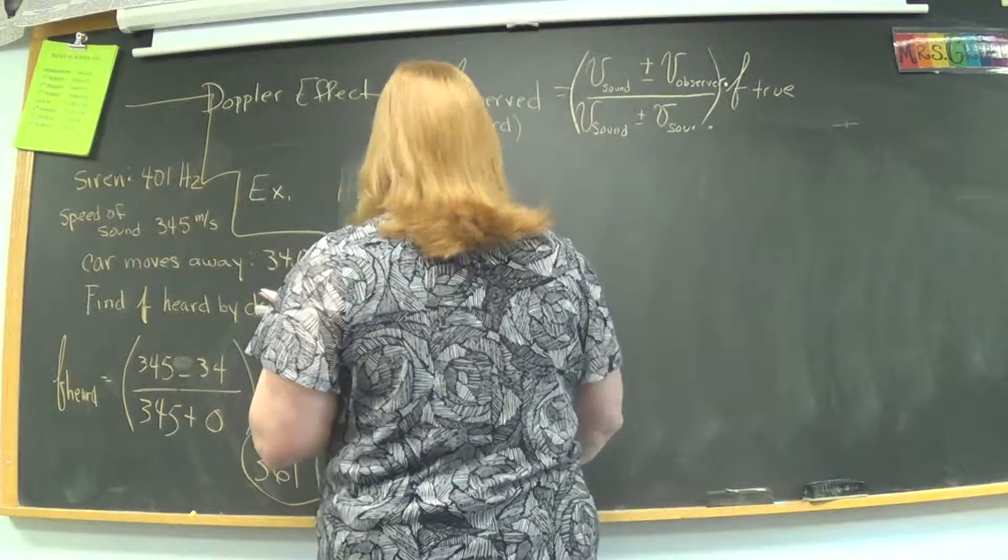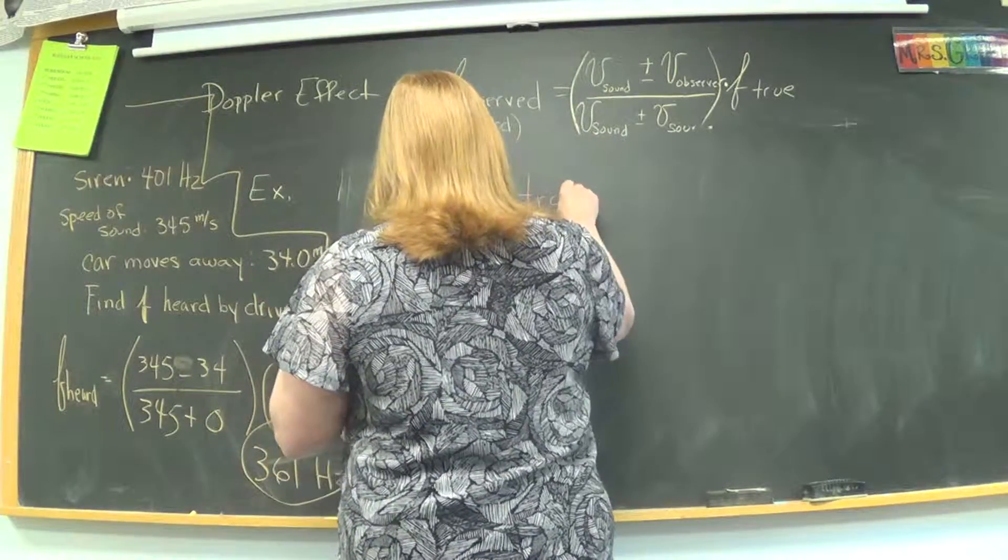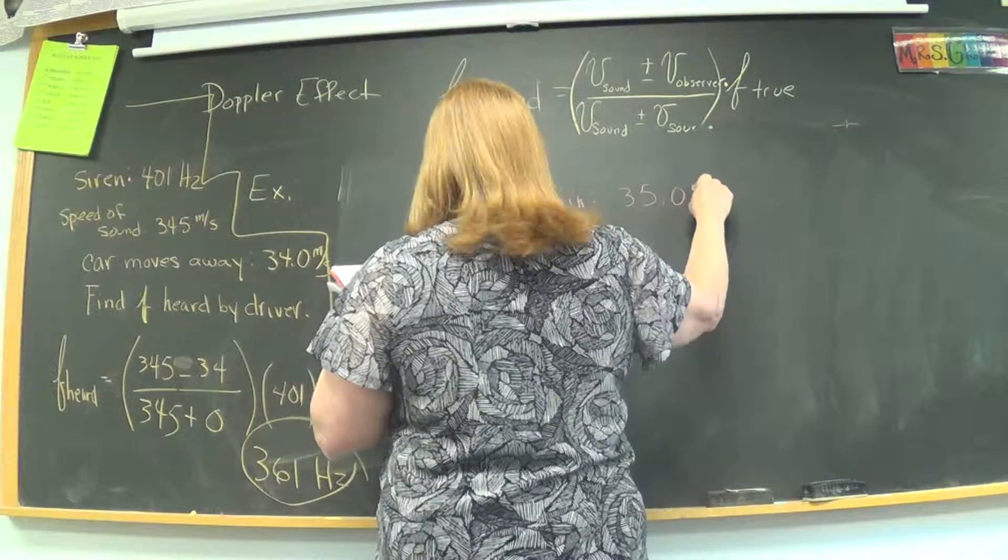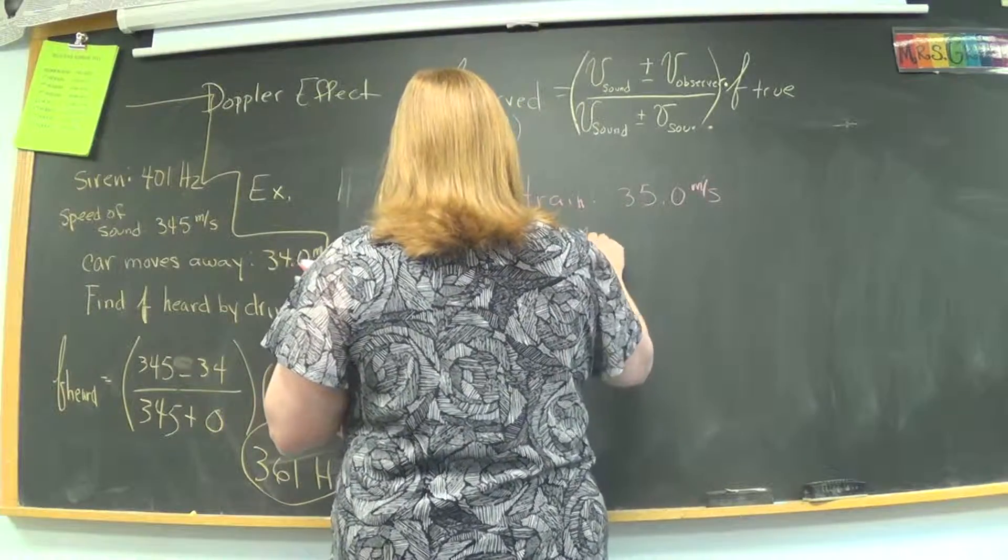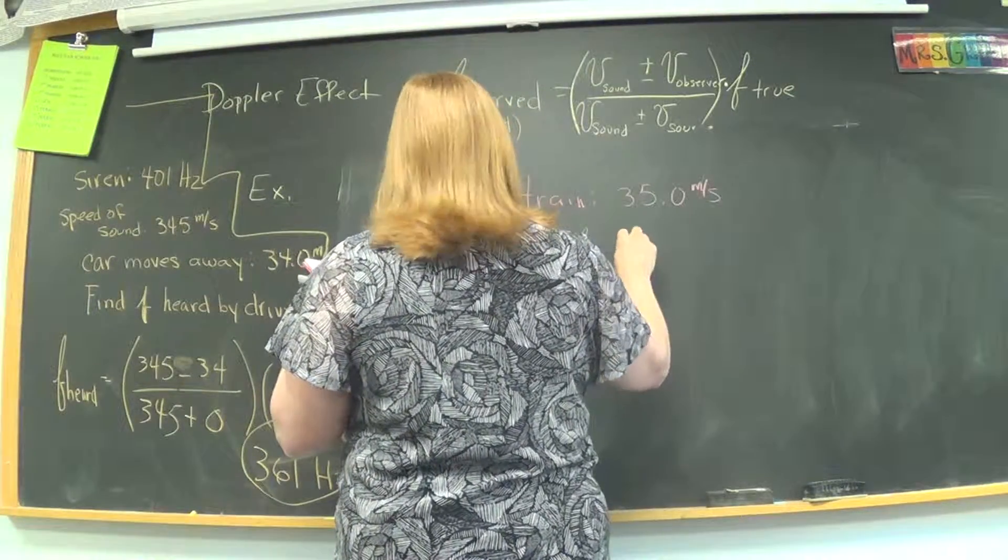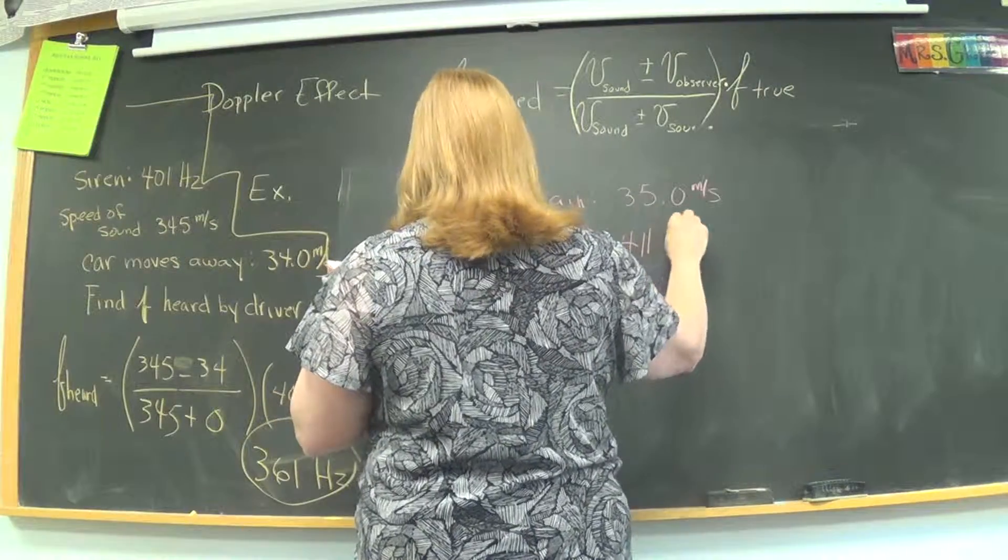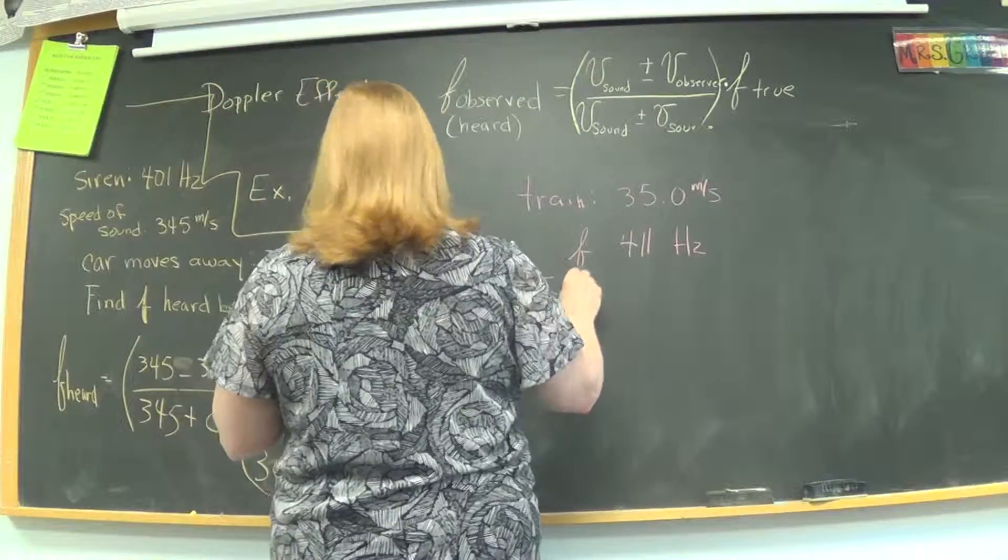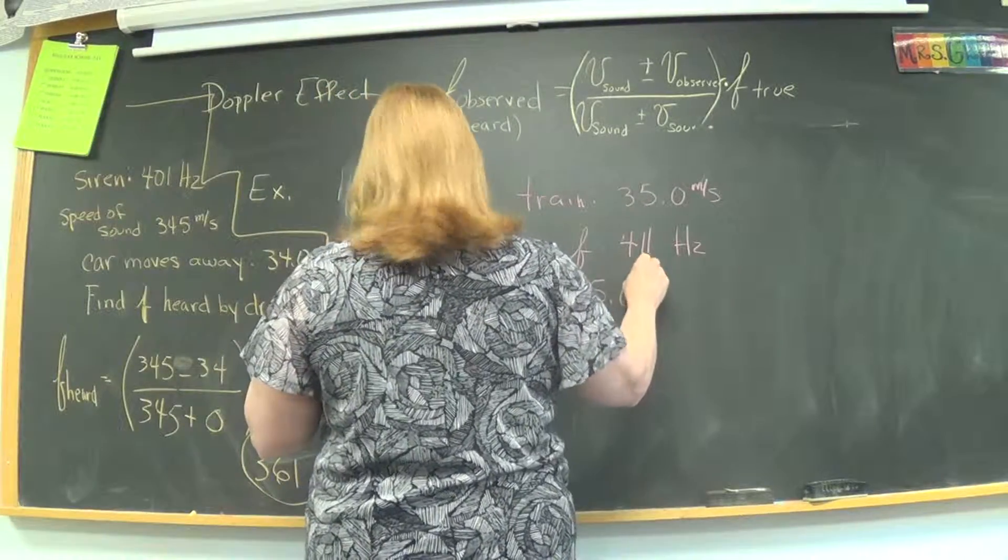So far I've said the train moves at 35 meters per second. The frequency of the train whistle is 411 hertz. That's the true one. The temperature outside today is 25 degrees Celsius.